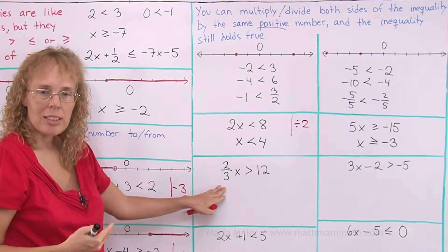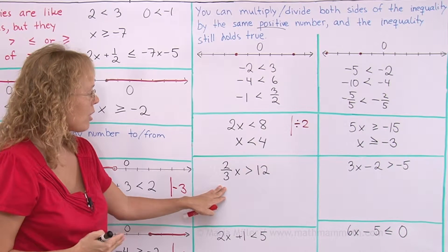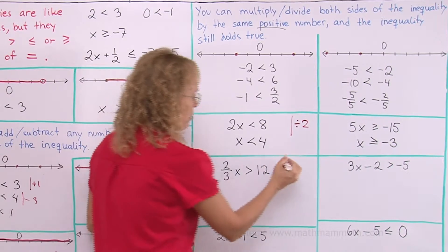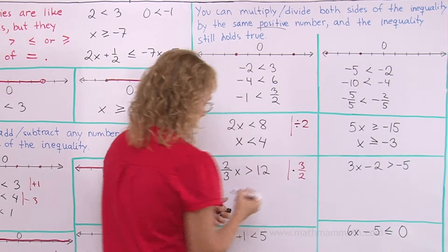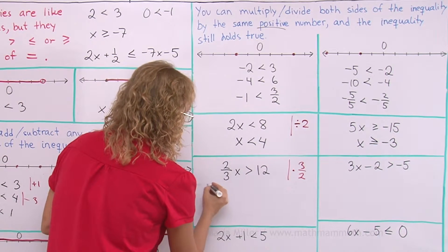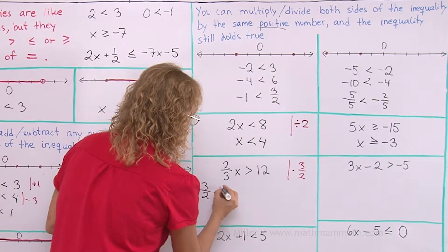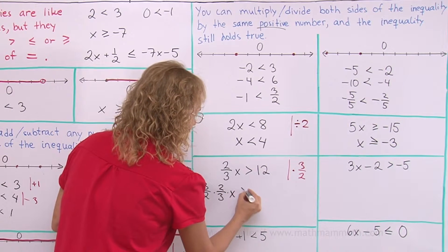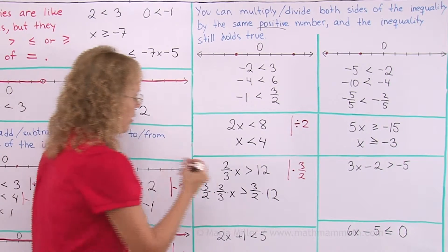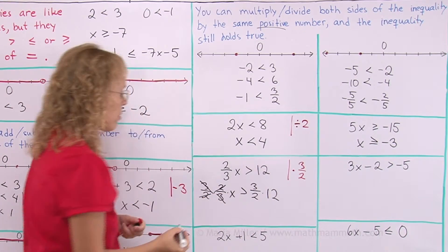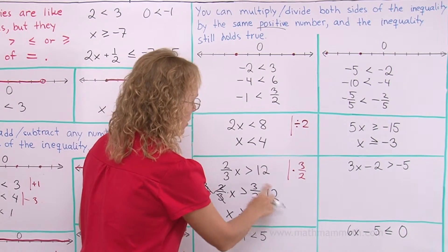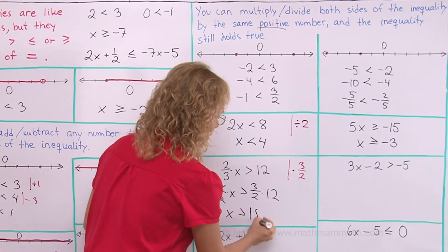Here, it's a 2 thirds times x. So this one, I want to actually multiply, not divide, but multiply. I want to multiply by the reciprocal of this. Multiply by 3 over 2. And that is allowed in an inequality, like I mentioned. So we get 3 over 2 times 2 over 3 times x, greater than 3 over 2 times 12. And then over here, these cancel, 2s and 3s. So x is left alone, and here greater than. And this here is 36 divided by 2, which is 18.